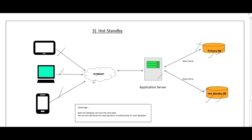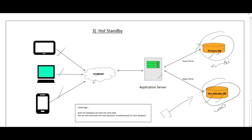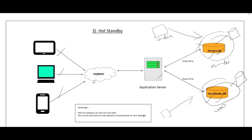With hot standby, we can also serve read requests from different geographic locations. For example, if one DB is in India and another in the US, users from the US are served by the US database and users from India by the India database. We can further take replicas of these databases as needed. I hope you liked the video — please subscribe to my channel to learn more about system design topics.